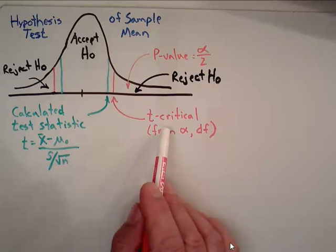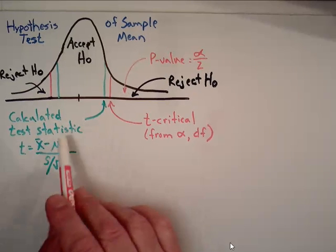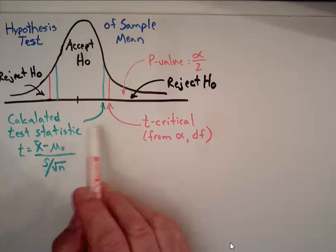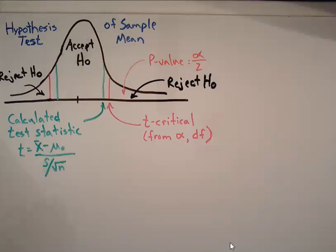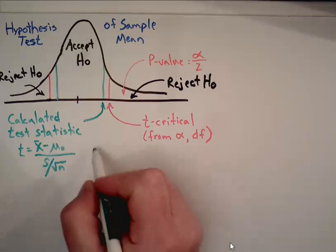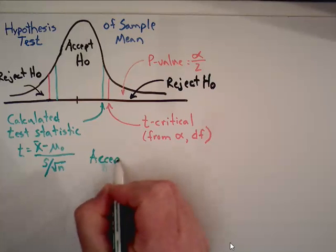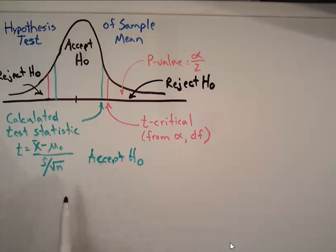We can compare the t-critical to our calculated test statistic, and if the test statistic falls inside of the critical value, and that's what it does in this case, what do we do? Well, we can't reject the null hypothesis. We must accept it. So in this case, it's obvious, since the calculated t-statistic is falling inside of the test value, we are going to accept H0, the null hypothesis, whatever it was. In this case, we were doing hypothesis of a sample mean, so we had proposed that a sample mean was a certain value.